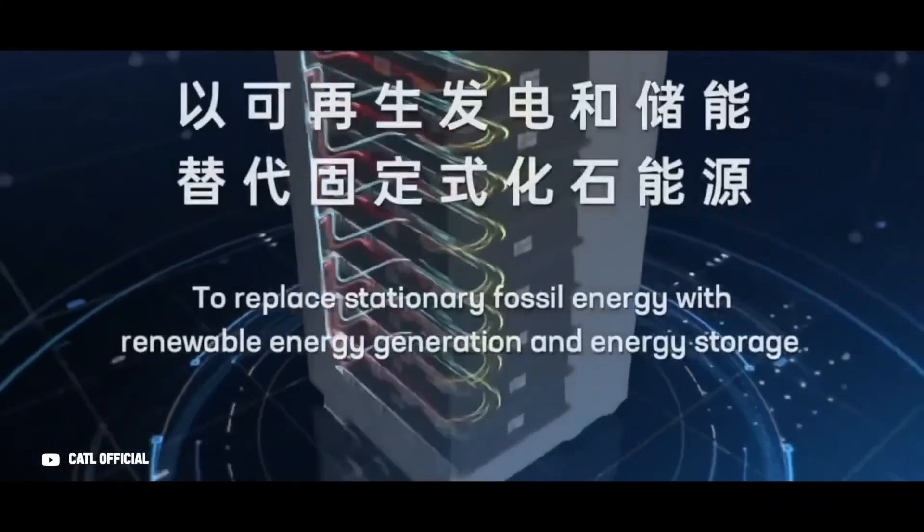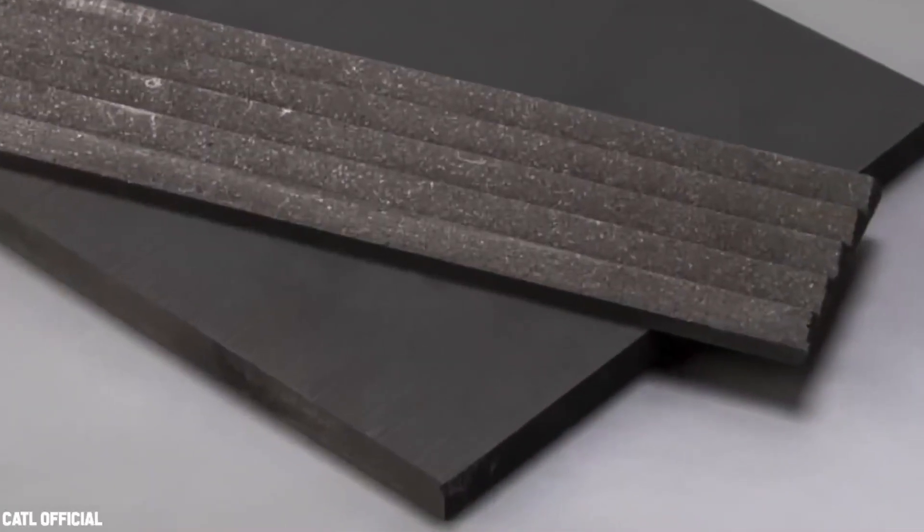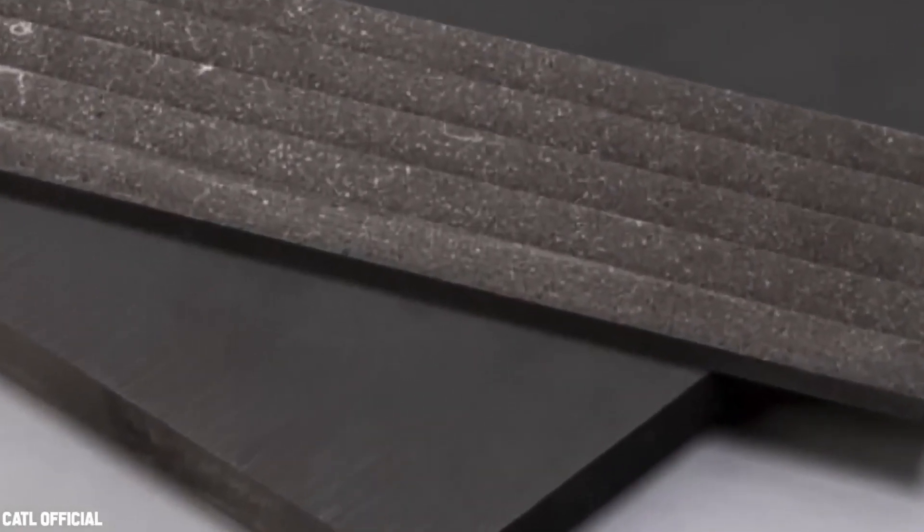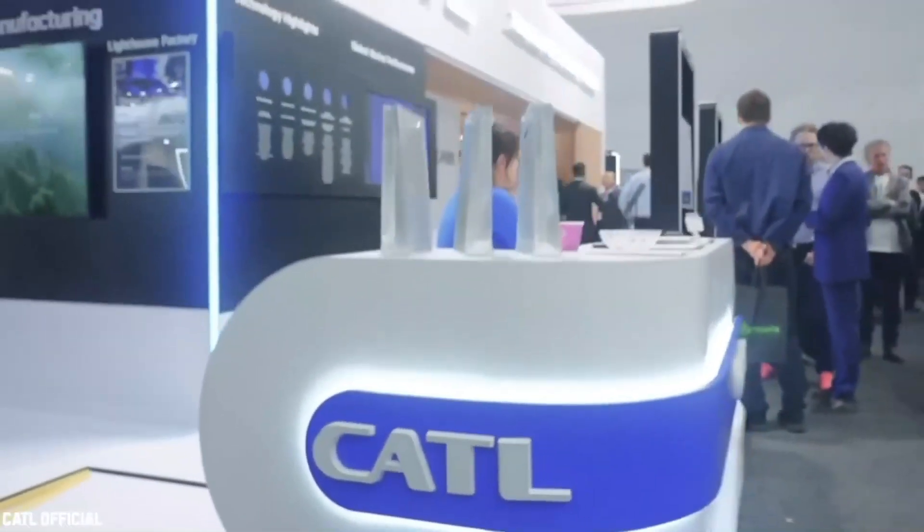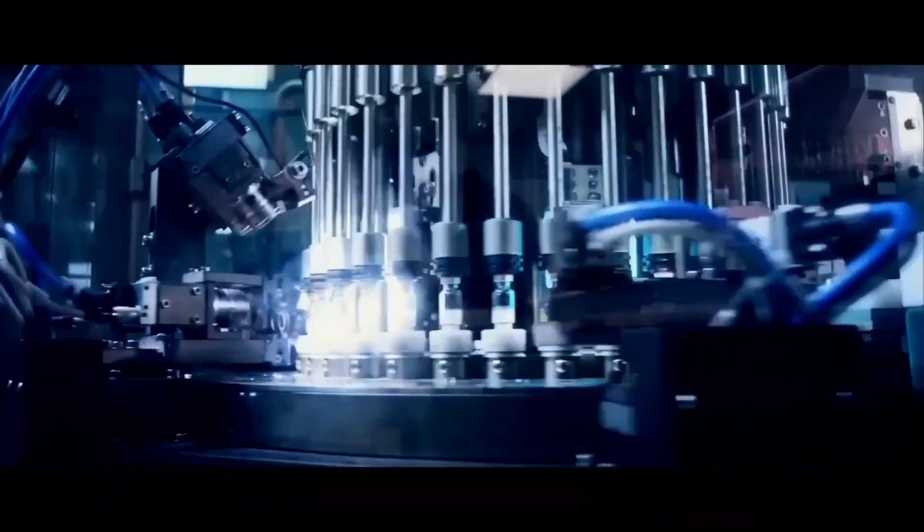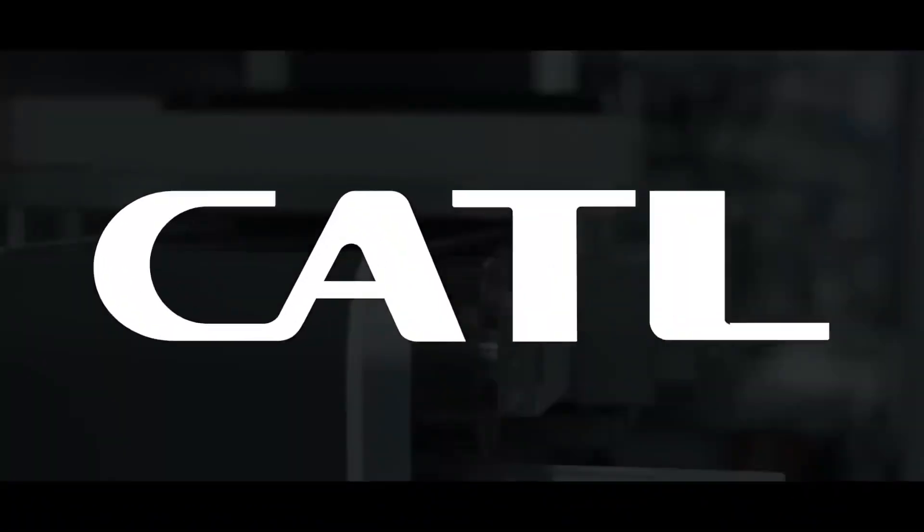Because sodium-ions are physically bigger than lithium-ions, they cannot readily pass through the layers of a graphite anode. CATL unveiled the first generation of their sodium-ion battery in July 2021, with an energy density of 160 watt-hours per kilogram and a 0-80% charge time of under 15 minutes.